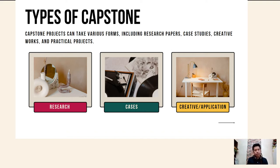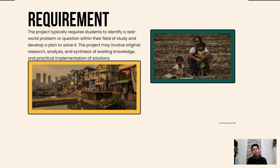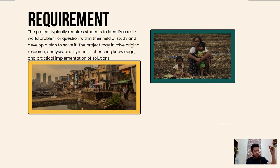It could also be an application. You may invent something in order to solve a particular societal problem, or devise some innovative way of doing things in order to solve a societal problem. The basic requirement of a capstone project is that the project typically requires students to identify a real-world problem or question within their field of study and develop a plan in order to solve it. If there is no real-world problem or practical question, there is no capstone study.